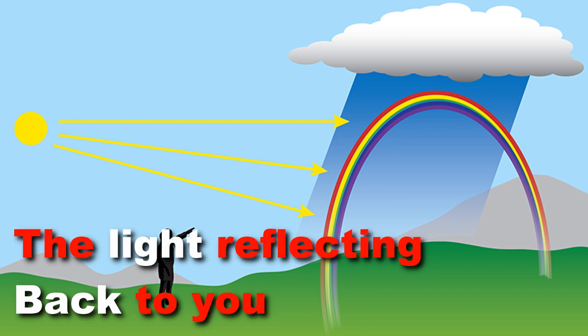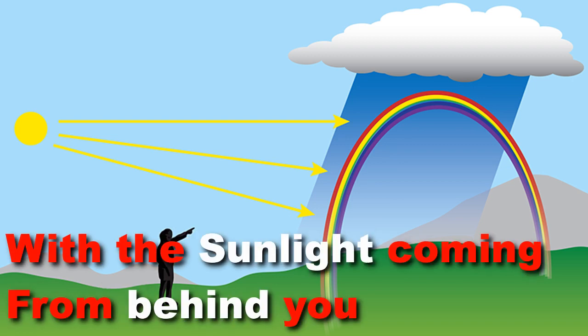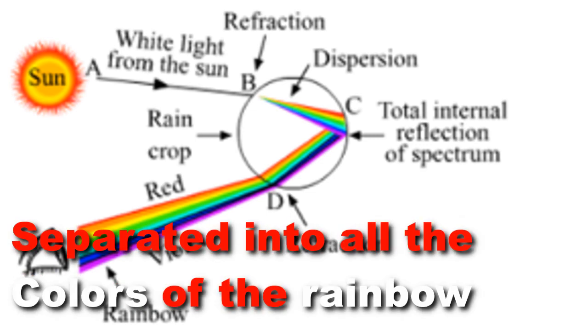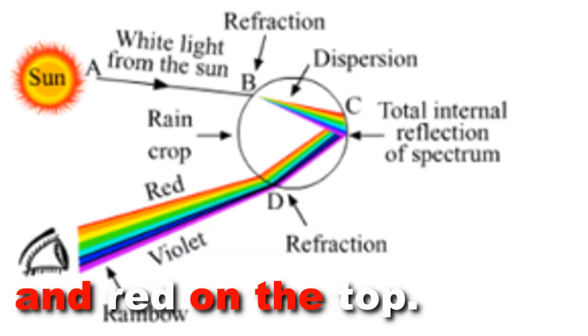The light reflecting back to you, the observer, with the sunlight coming from behind you, from the water droplets will appear separated into all the colors of the rainbow. Violet will be on the bottom and red on the top.